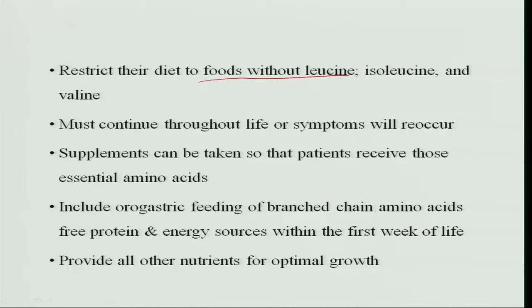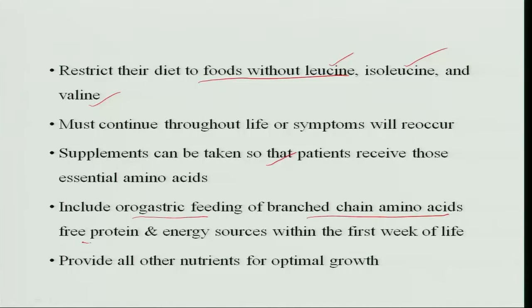The diet must be restricted to foods without leucine, isoleucine, and valine, and this must continue throughout life — whenever these amino acids are given, symptoms will reoccur. Lifelong treatment requires avoiding leucine, isoleucine, and valine, while supplements can be taken so that patients receive these as essential amino acids in controlled amounts. Orogastric feeding — directly oral or into gastric feeding — of branched-chain amino acids can be provided, along with free protein and energy sources within the first week of life.